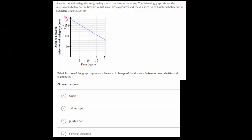So it looks like as time increases, the distance between these will start to approach each other. So essentially, one is growing from the top, one is growing from the bottom, and they're getting closer and closer to each other. So our question: which feature of the graph represents the rate of change of the distance between the stalactite and stalagmite. So whenever you see rate of change, you want to think about slope.